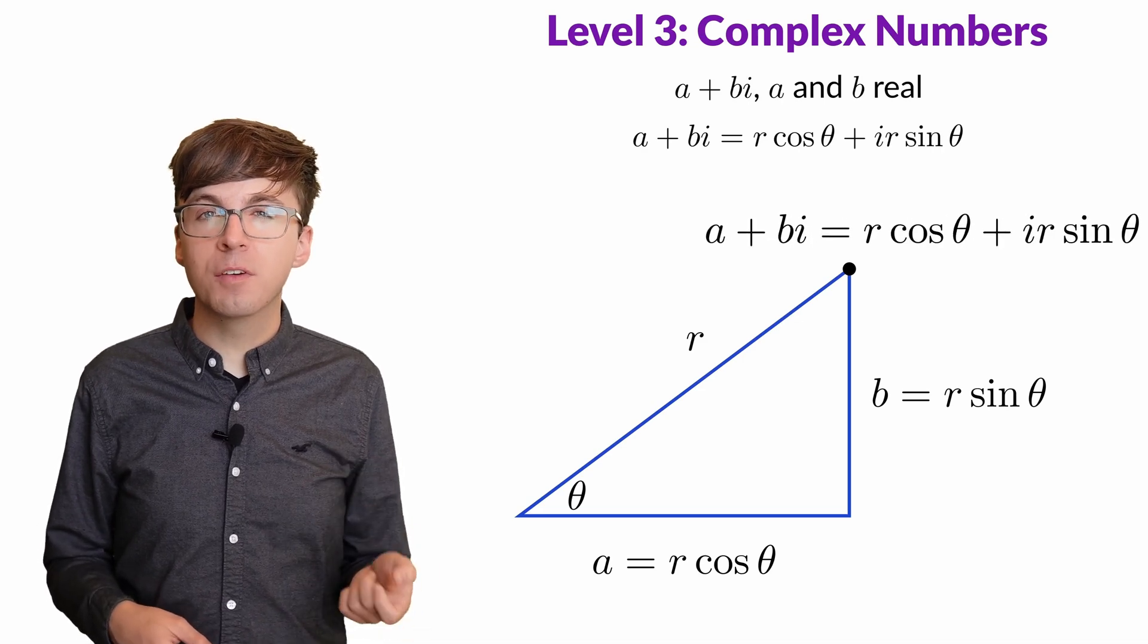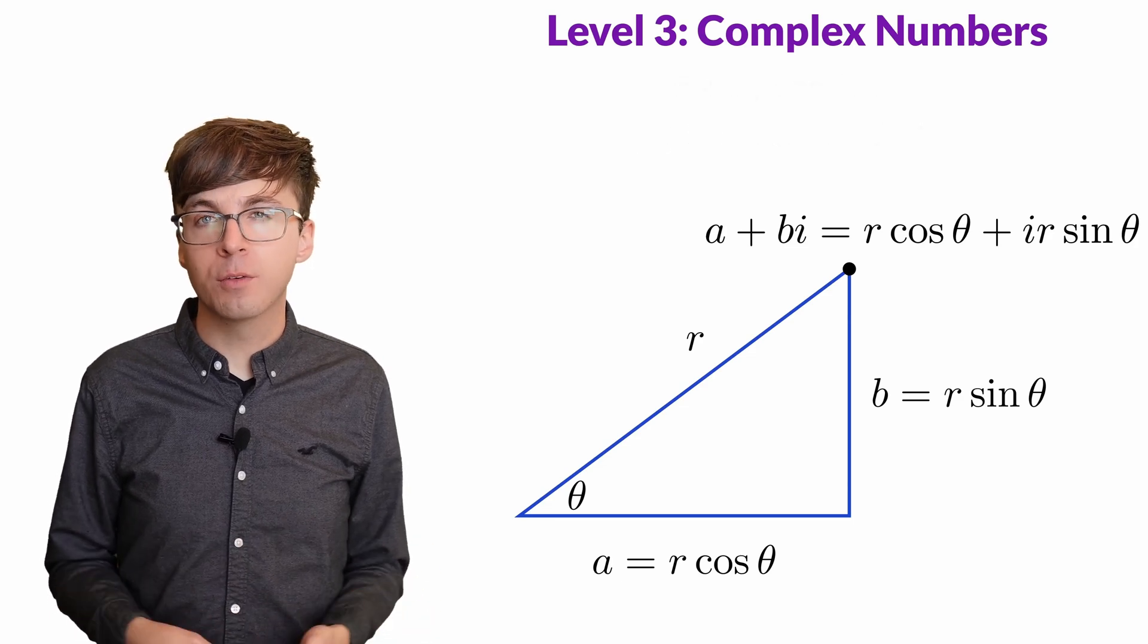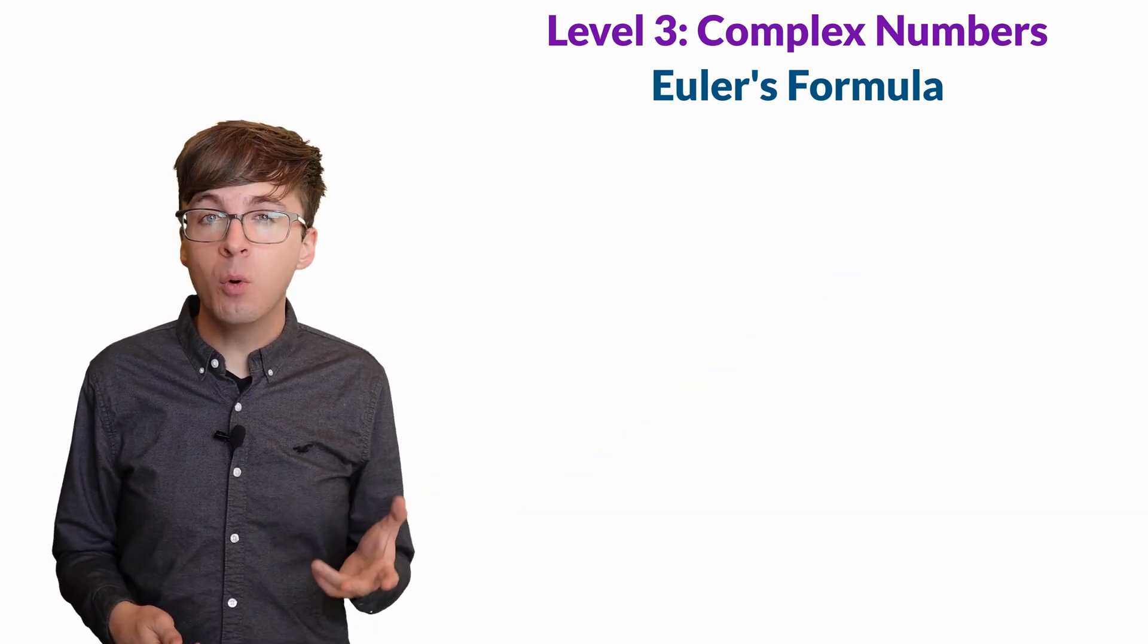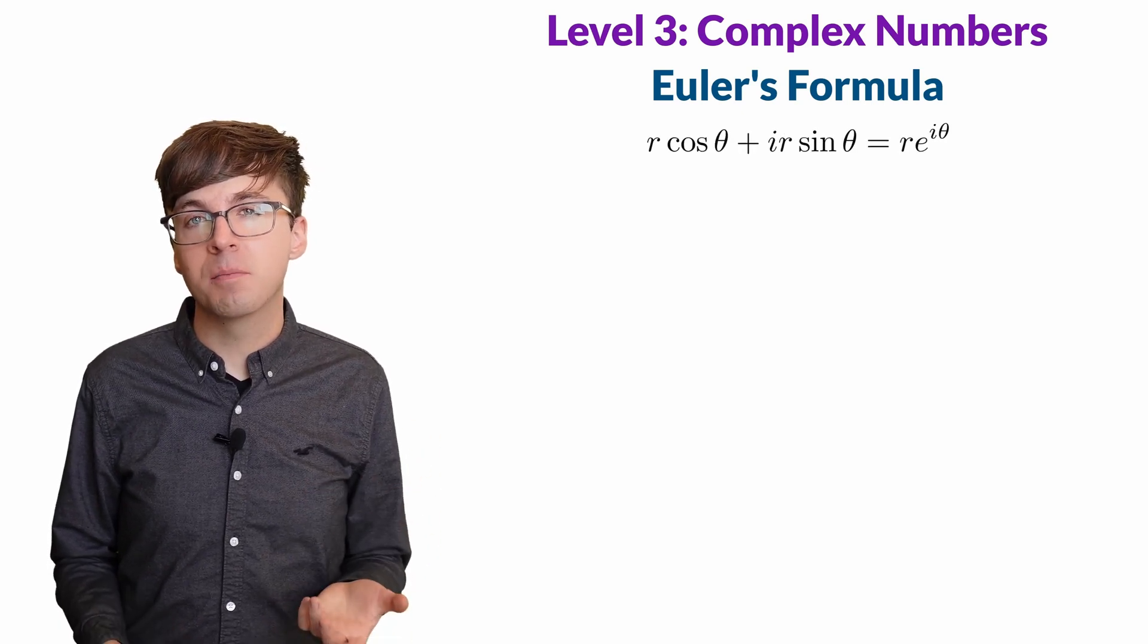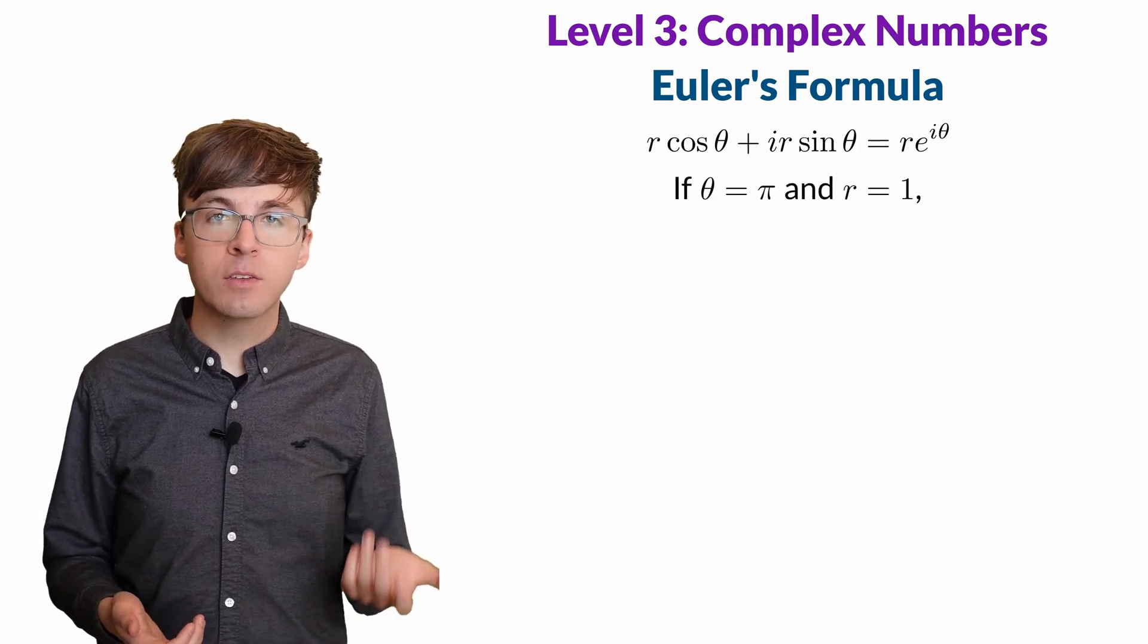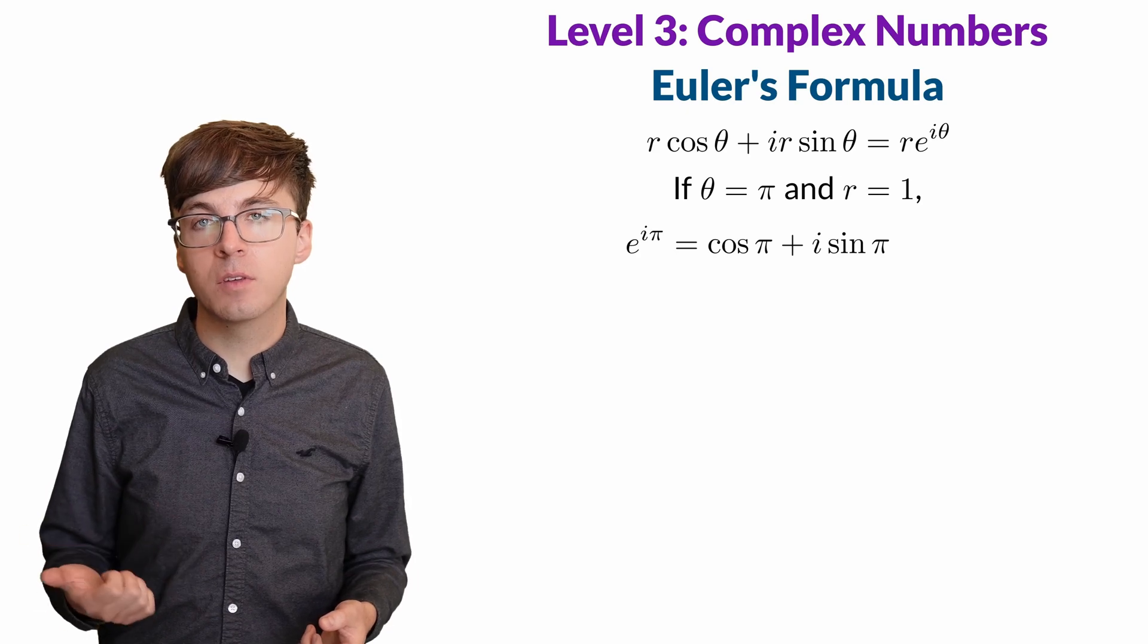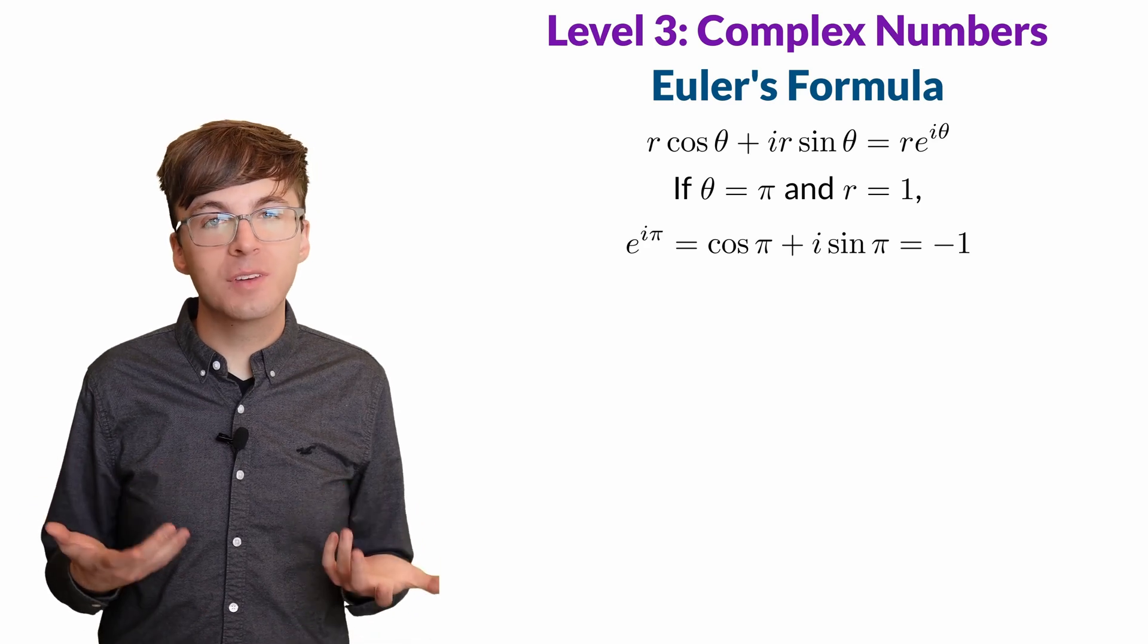We can take this one step farther to get perhaps the most amazing equation in all of math, Euler's formula, which connects e, π, and i in an unexpected way. Euler's formula states that the polar form of a complex number is equal to r times e^(iθ). Then what happens when we have an angle θ equal to π and the radius r equal to 1? We get e^(iπ) equals cos(π) plus i times sin(π), which is negative 1. So e^(iπ) equals negative 1.